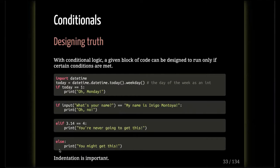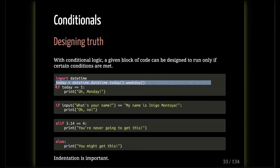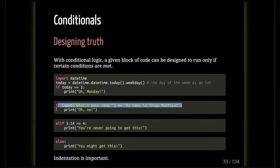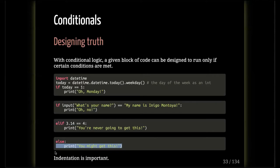Otherwise, if 3.14 is not 4, we'll print 'you might get this.' So this whole program, if run today, would import datetime, check the date as a number. If it's Monday we print 'oh Monday', but it wouldn't do that today because today's Tuesday. It will ask what's my name — I won't say Inigo Montoya so it won't print 'oh no'. 3.14 is not 4 so it won't print 'you're never going to get this.' In all other cases, it will print 'you might get this', which in this case we actually will.